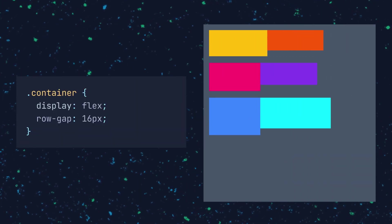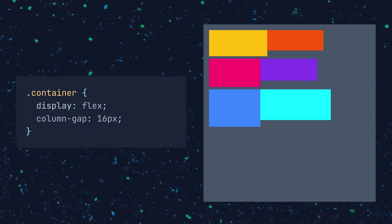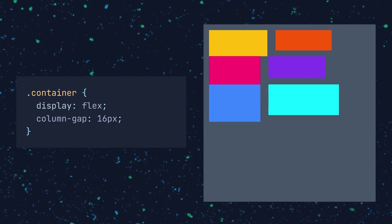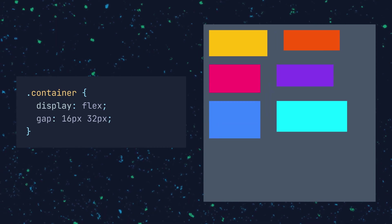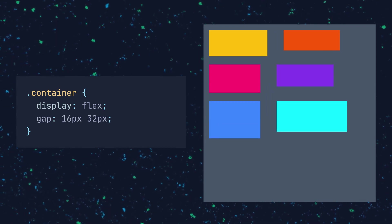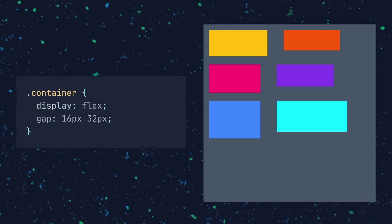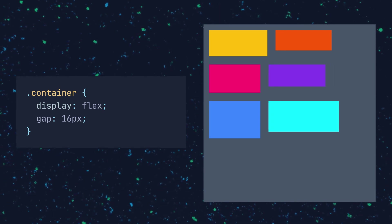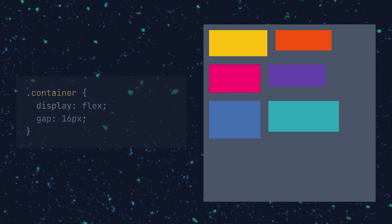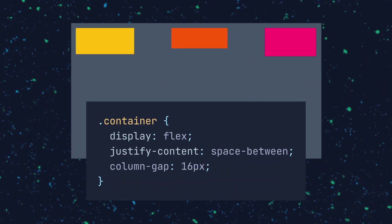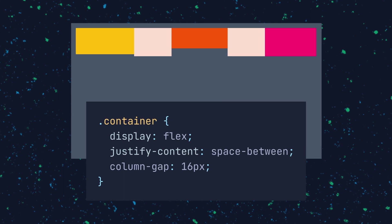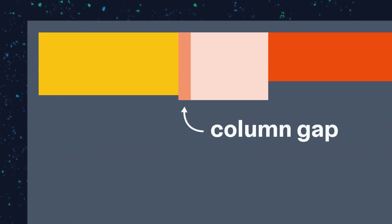There's one more property you need to learn about flex containers: row-gap and column-gap. Setting row-gap will add space between the elements on the rows, while column-gap will add space to the elements on the columns. There's also a shorthand method called gap — setting two values sets the row and column gap, while setting one value sets the same value for both. You can think of these properties as a minimum gutter between your elements.